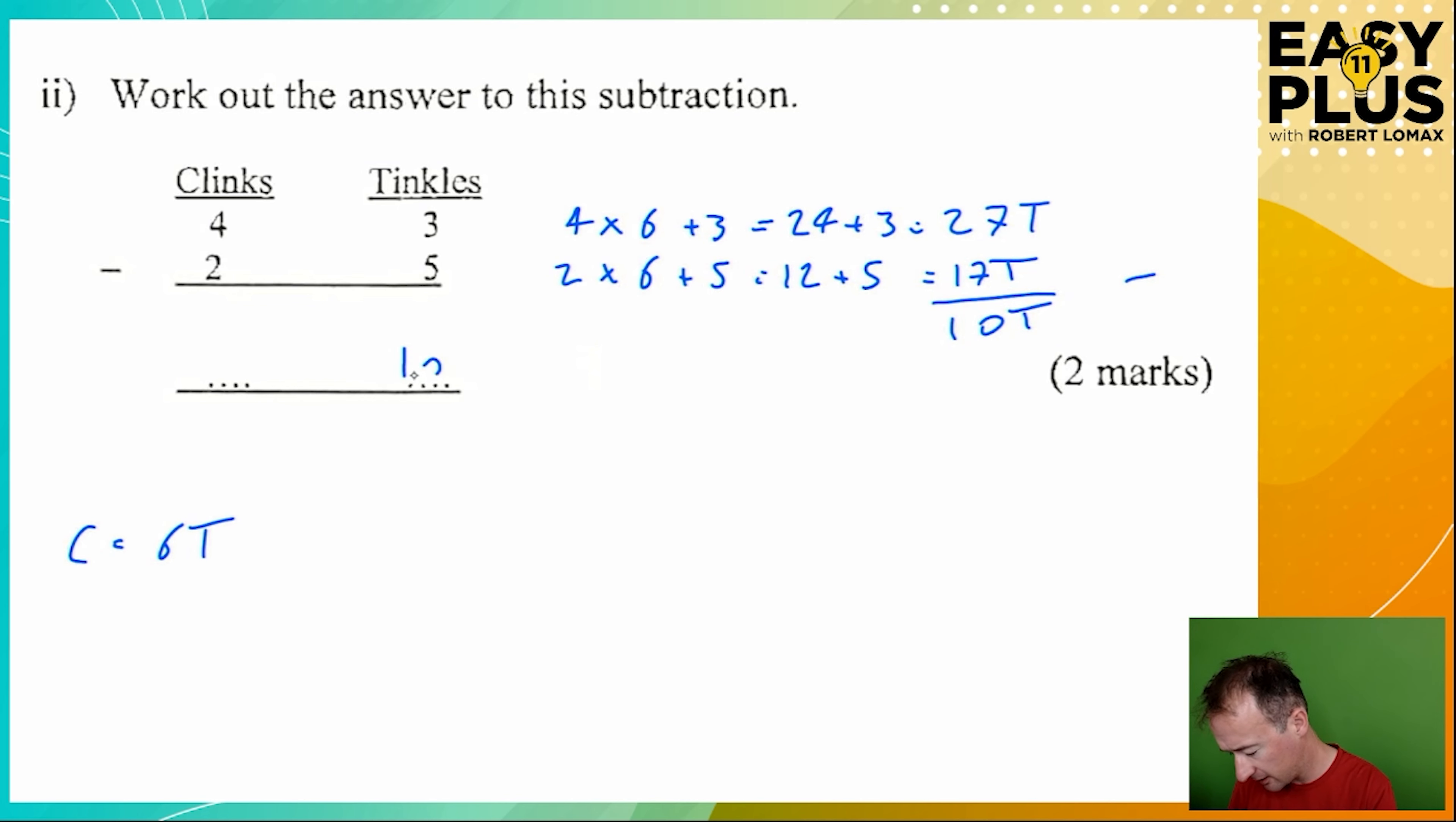So we're left with 10 tinkles. But can we just write 10 here? No we can't, because we know that there are 6 tinkles in a clink. Because 10 can be broken into 6 and 4, 10 tinkles include 1 clink and 4 tinkles.